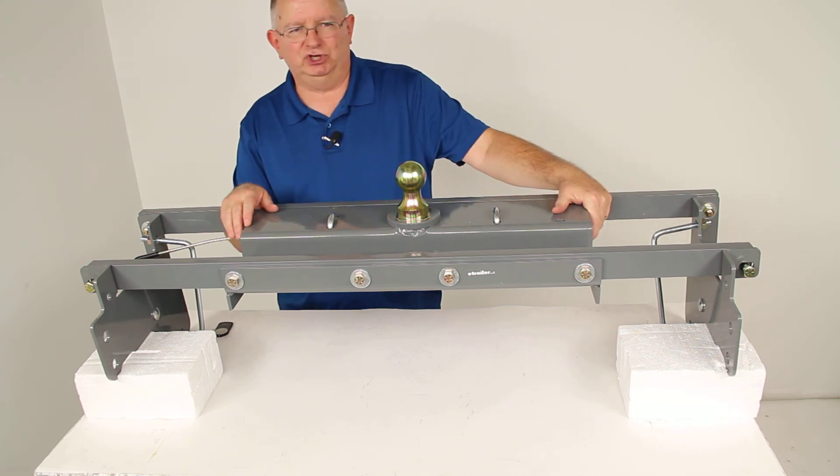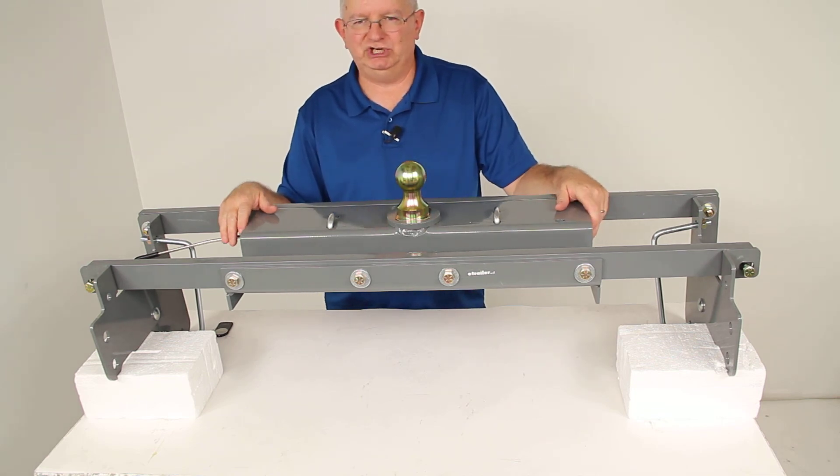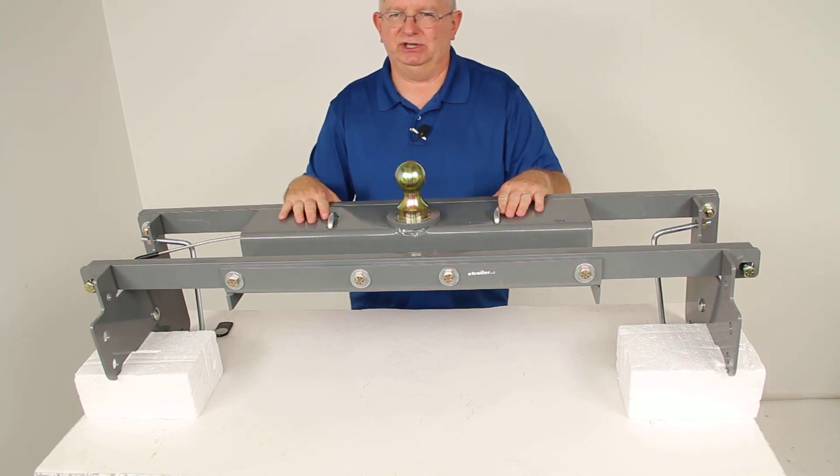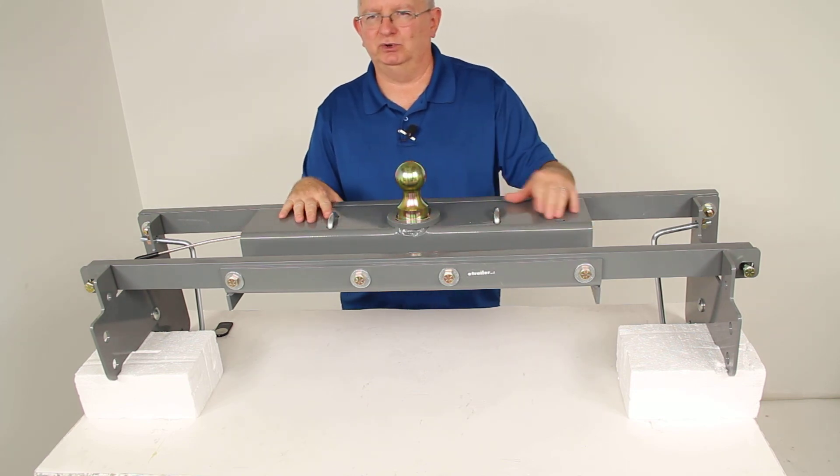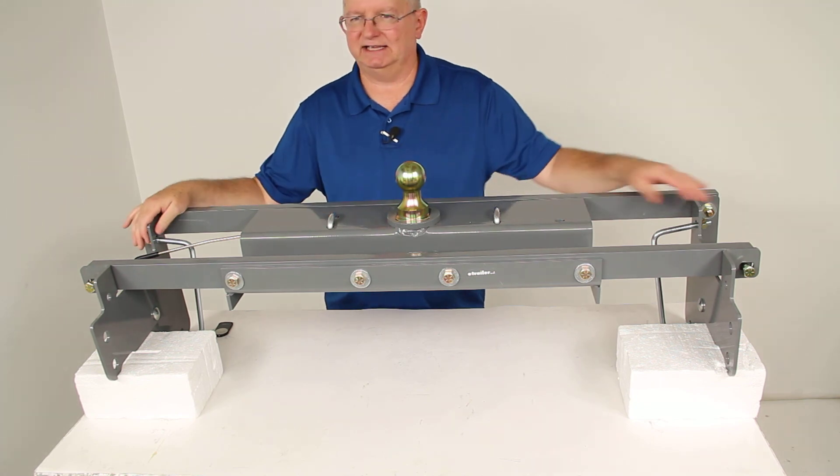And that should do it for the review on part number BWGNRK1062, the B&W turnover ball underbed gooseneck trailer hitch with the custom installation kit.